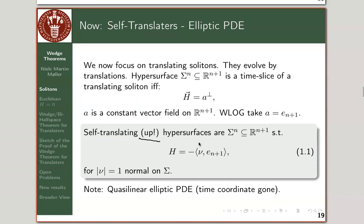It's a bit like the mean curvature equals zero — the minimal surface equation — or you could say it's a sort of perturbation with a gradient term of that. That's what I think about.